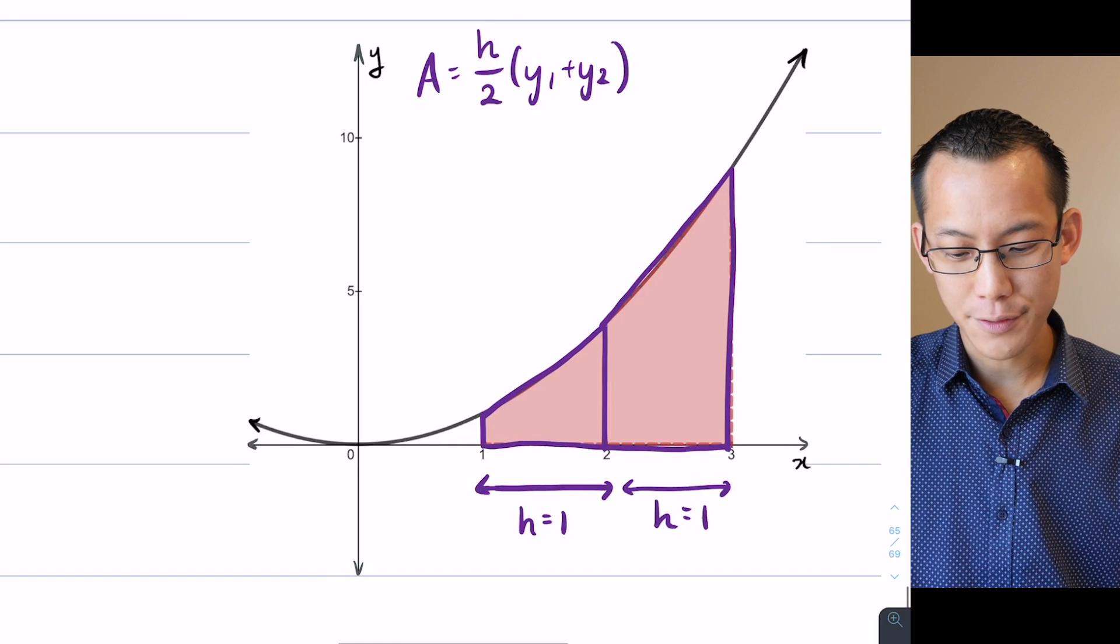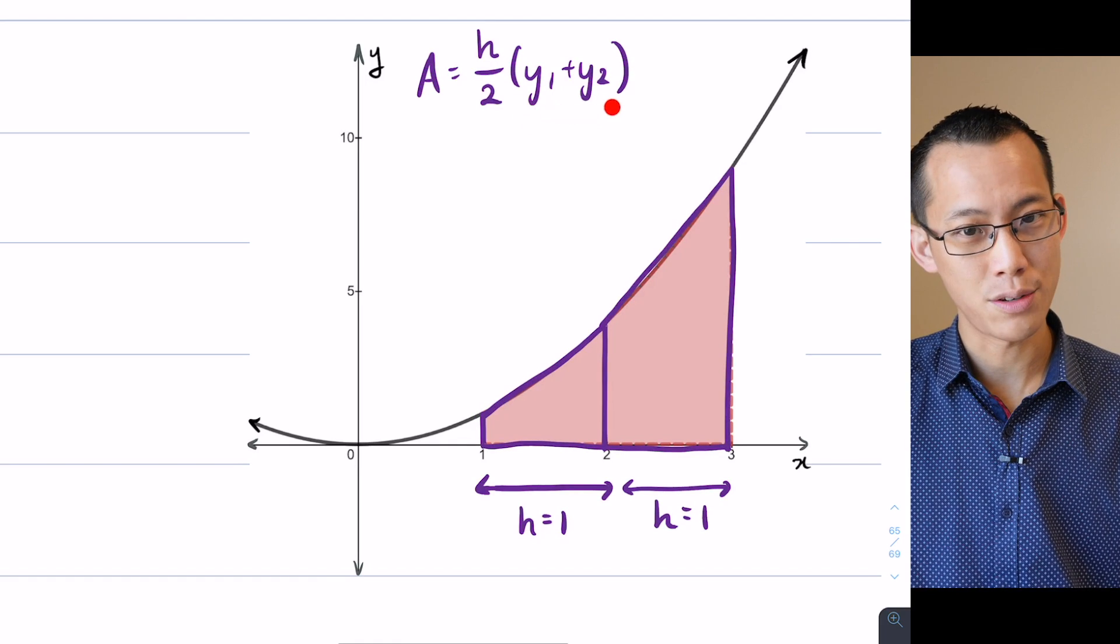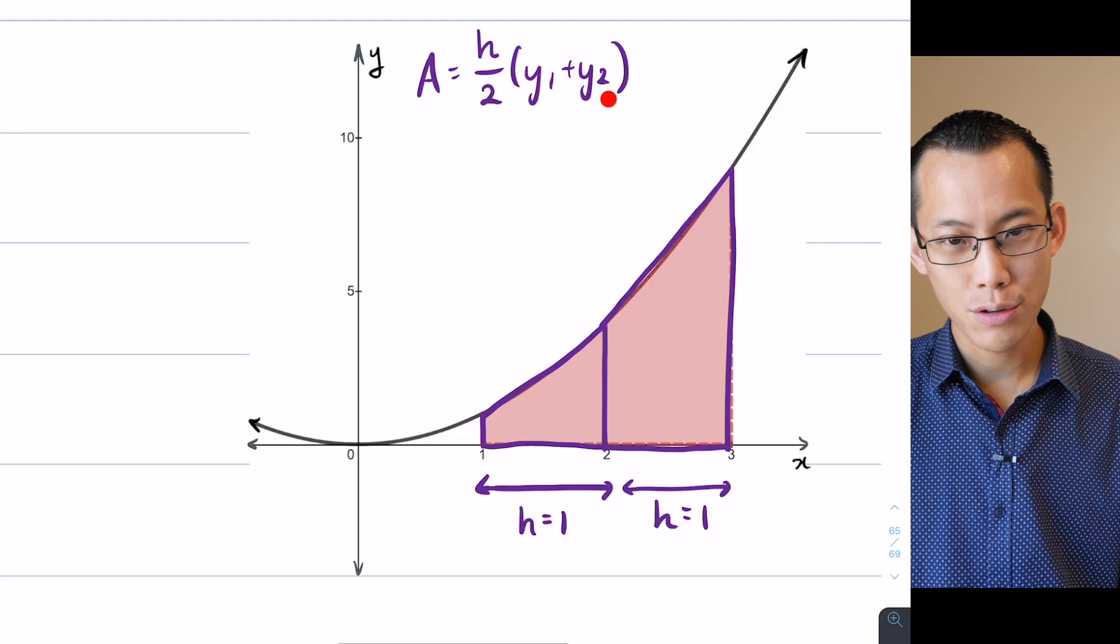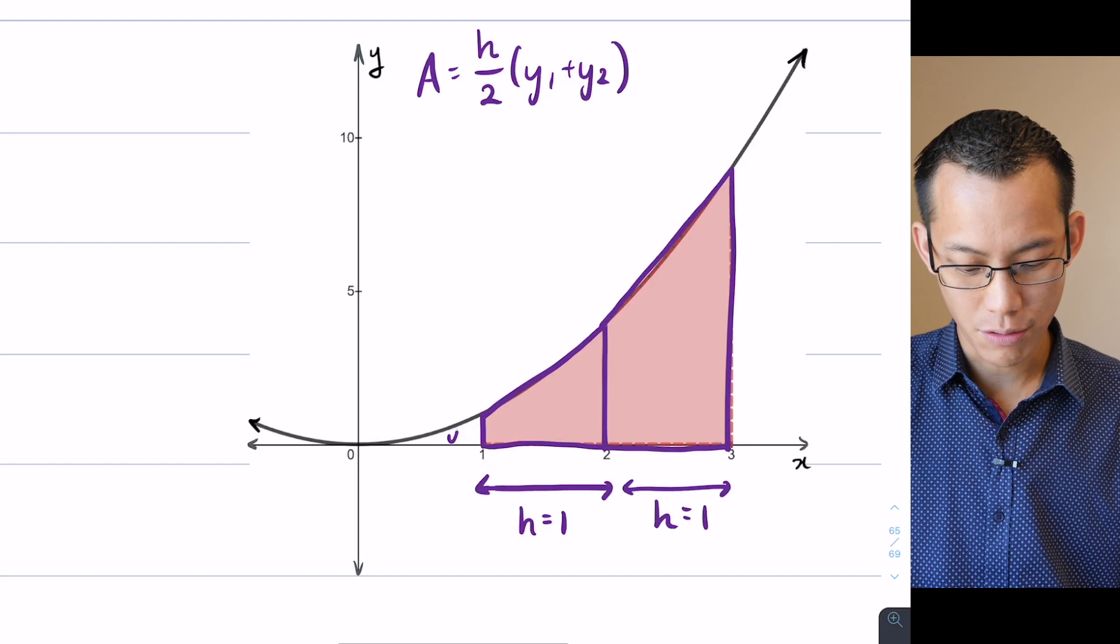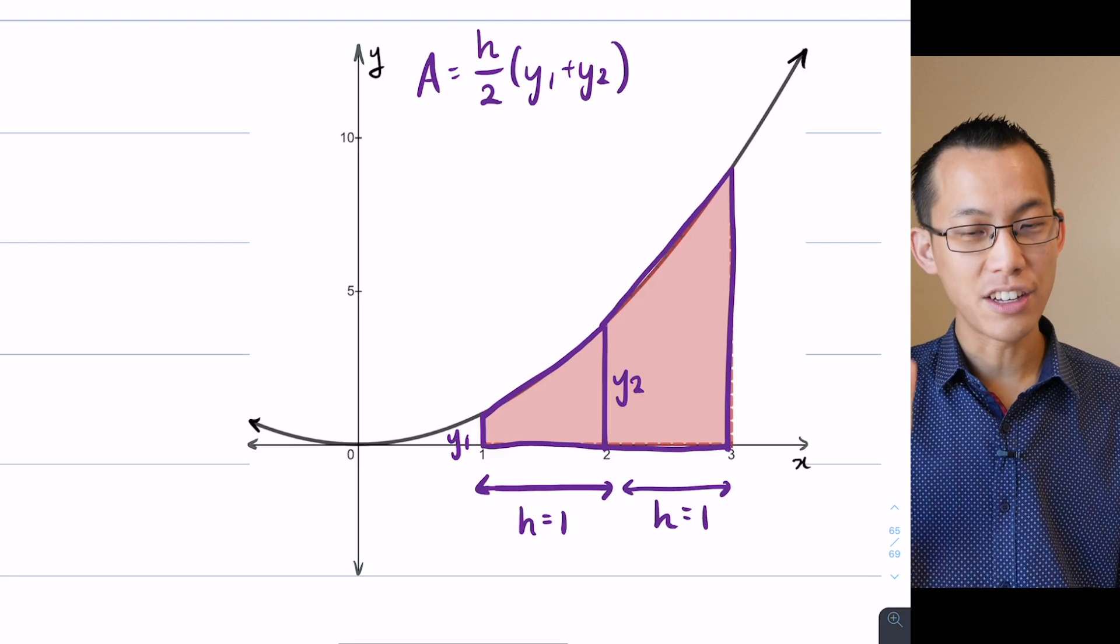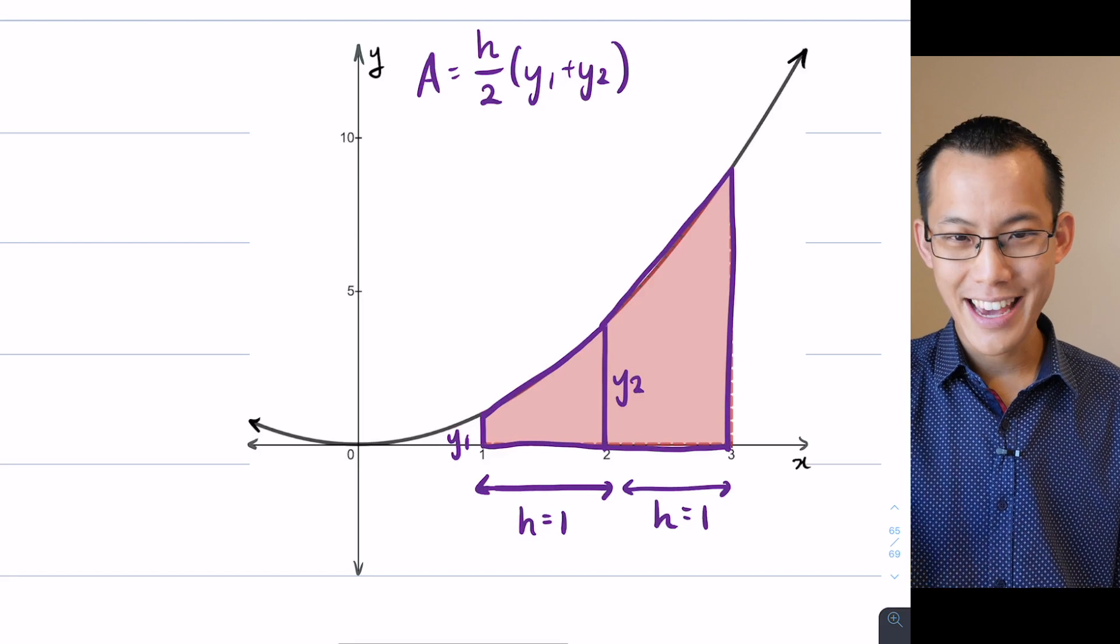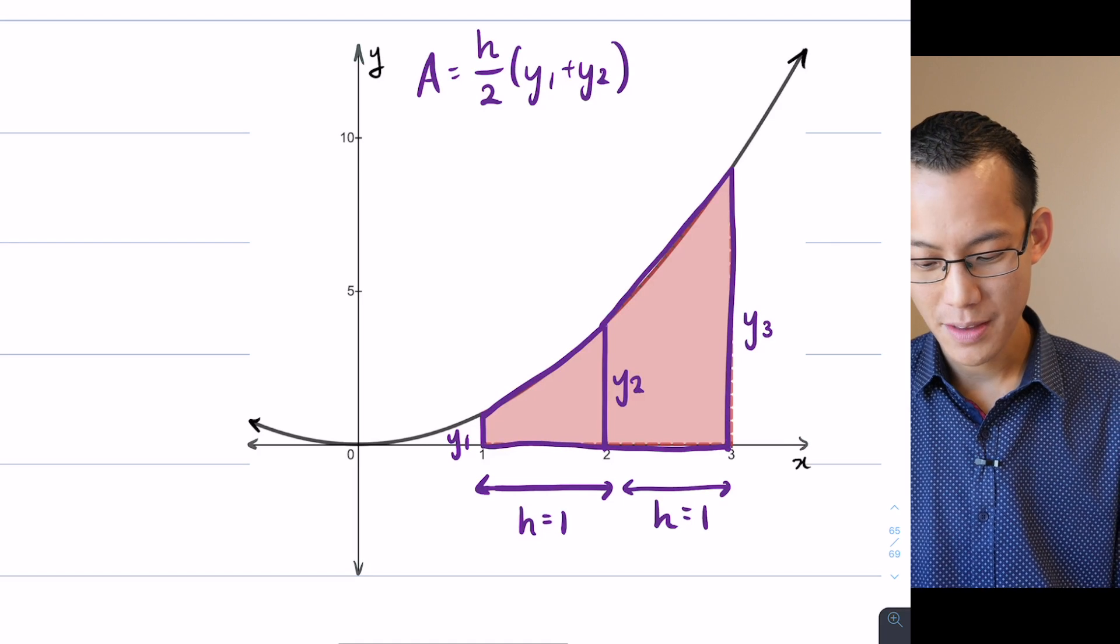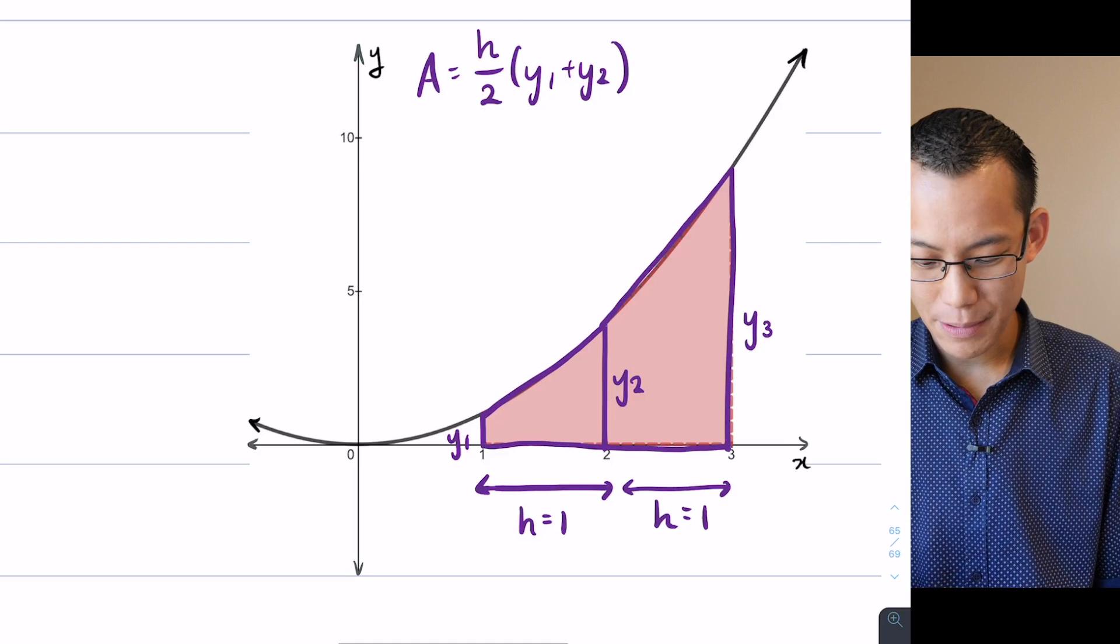Now, I've got my height, and I've set up this sort of arrangement so they're the same, but now I need my parallel sides, right? And this time, I don't just have two parallel sides, y1 and y2, right? y1 and y2 will just deal with the first trapezium. I'm going to call this one y1, and I'm going to make y2 the one in the middle so that I can go in order. Now I've got, yeah, well done, I've got a y3, okay?